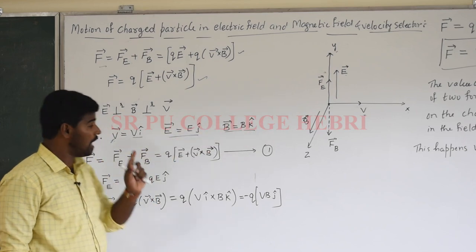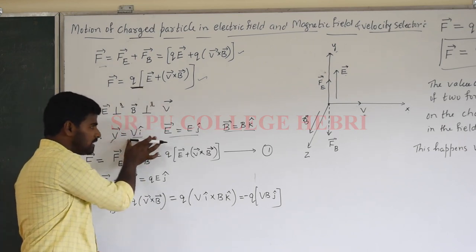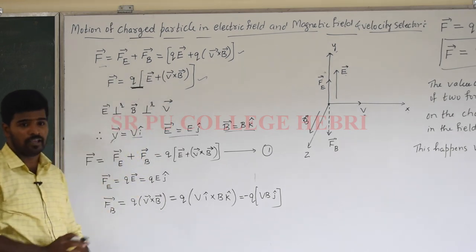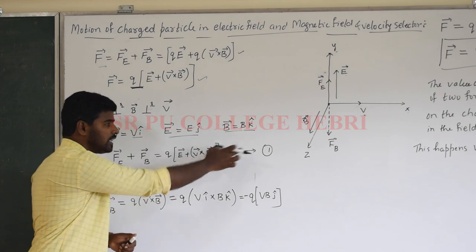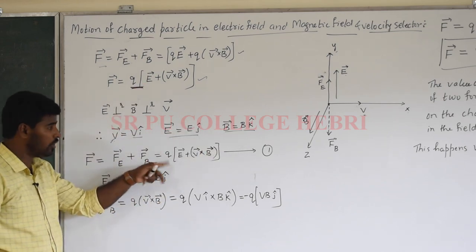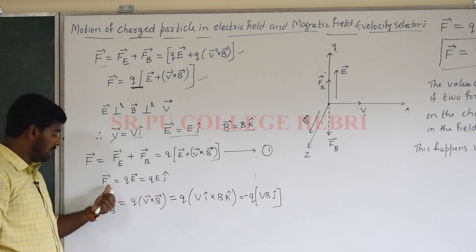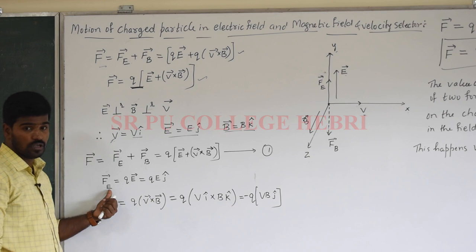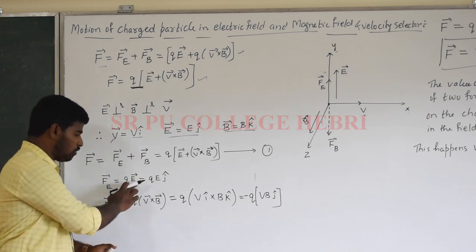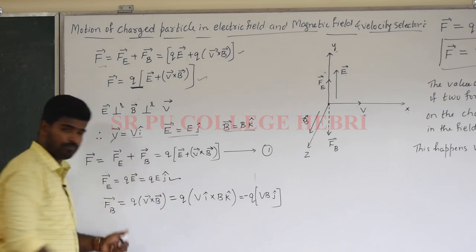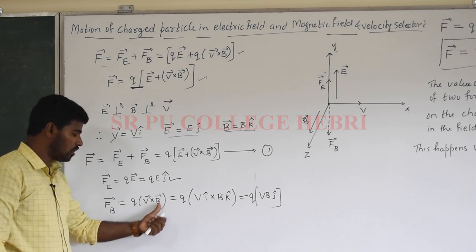Now we substitute the values of velocity, electric field, and magnetic field into the Lorentz force equation. F vector = F_E vector + F_B vector = Q(E vector + v vector cross B vector) — this is equation number 1. The electric force F_E vector = Q into E vector = Q(E j-cap). The magnetic force F_B vector = Q into (v vector cross B vector).